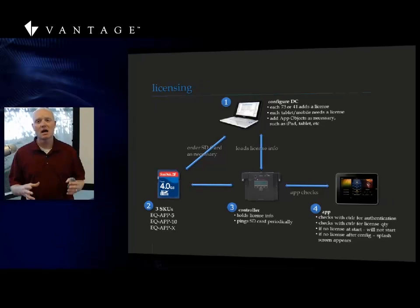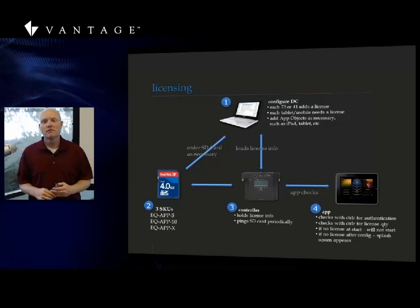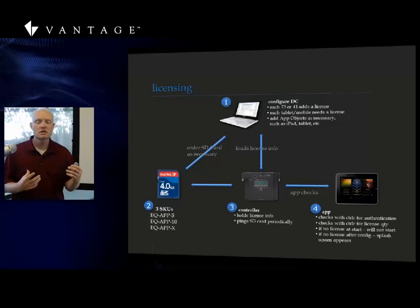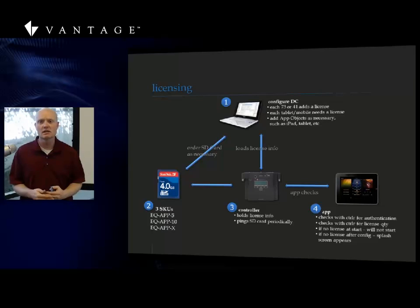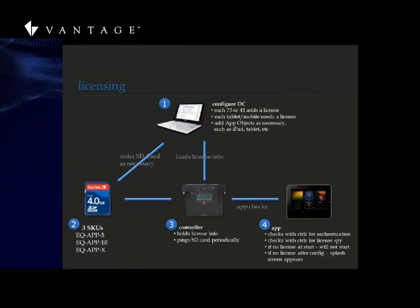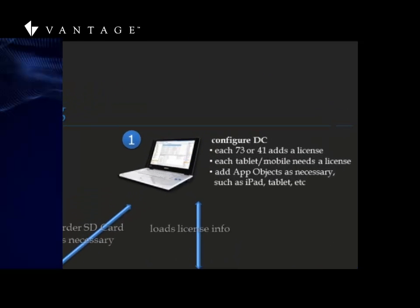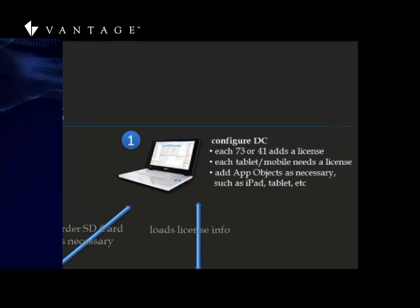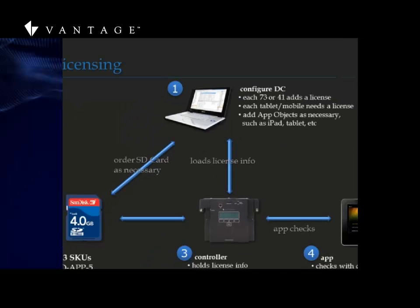Now let's talk about licensing. The system gets configured in Design Center just as it always has. Every time you add a 7.3 or a 4.1 — one of our Ethernet-based touchscreens with full capability — it adds an additional license for things such as apps.